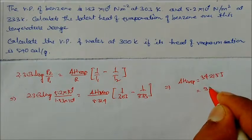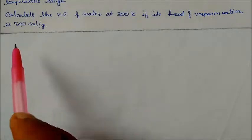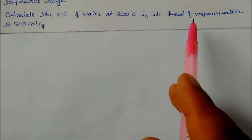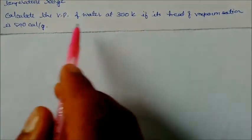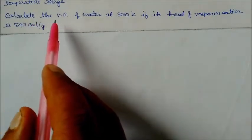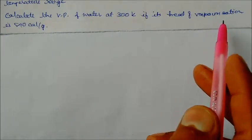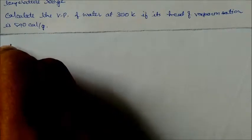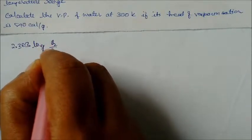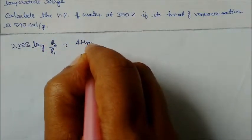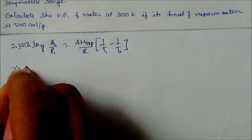Second question: calculate the vapor pressure of water at 300 K if its heat of vaporization is 540 kilocalories per gram. We use the same equation: 2.303 × log(P2/P1) = (ΔHvap / R) × (1/T1 − 1/T2).